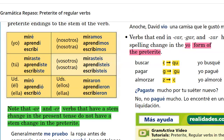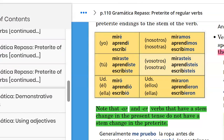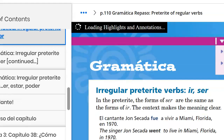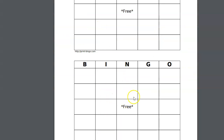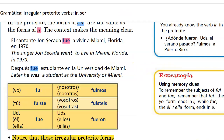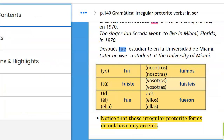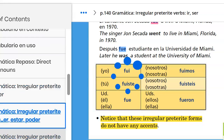For game two, we are going to use the irregular verbs we've gone over together, found on page 140. The verb IR and SER will be one of your verbs to conjugate: FUI, FUISTE, FUE, FUIMOS, FUERON. Remember, IR and SER share the same conjugations in the past. That'll be one verb, and the other four will be the verbs highlighted on page 142.